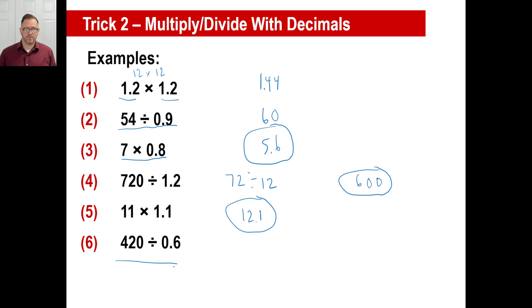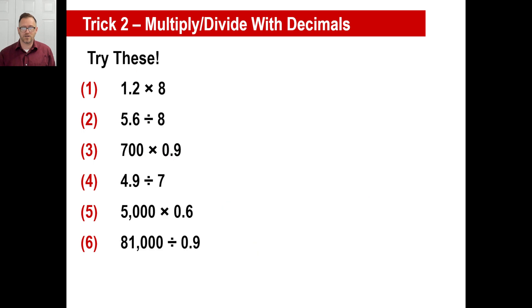Last one. This is a little trickier than all the rest of them. The estimate to 420 divided by 0.6, that's about 1. So 400, 500, somewhere around there. That's our guess. The actual problem, when we ignore zeros and decimals, becomes 42 divided by 6. Well, the answer to that is 7. What is it going to give us an answer that's closest to 400 or 500? There it is. That's the second trick of the week.